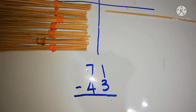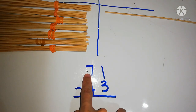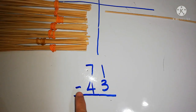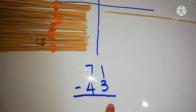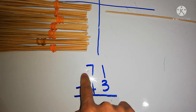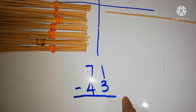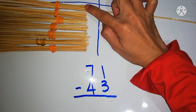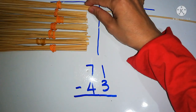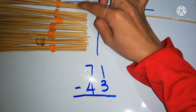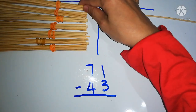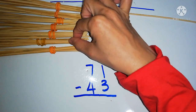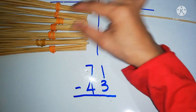The equation is 71 minus 43. We have 71: that's 70 and 1. We represent 70 as 10, 20, 30, 40, 50, 60, 70.